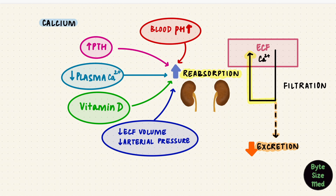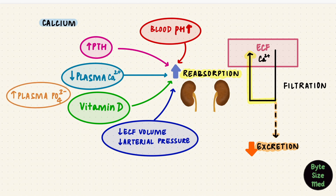Plasma phosphate also plays a role, since calcium and phosphate are linked. When plasma phosphate increases, it can stimulate the parathyroid hormone. PTH then increases phosphate excretion, but also increases calcium reabsorption, reducing calcium excretion.